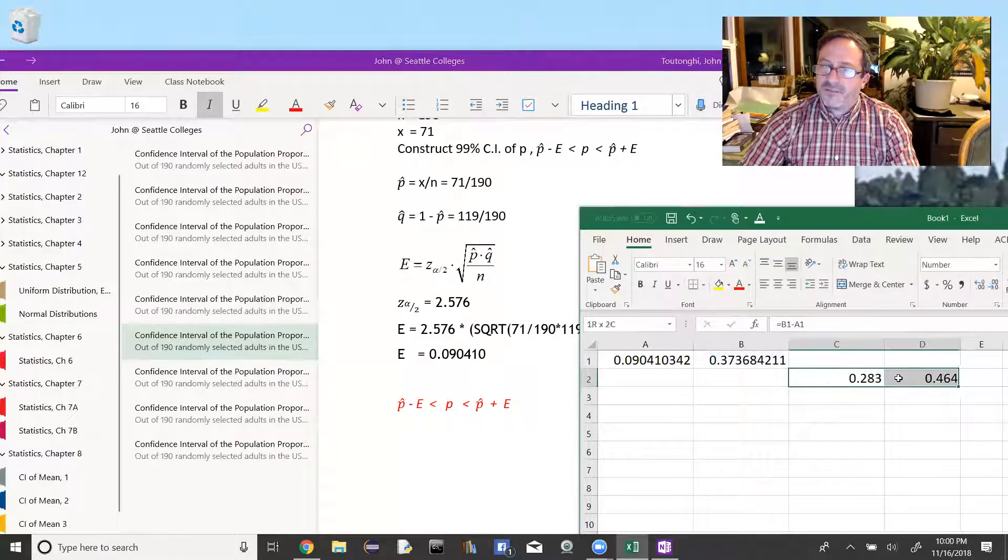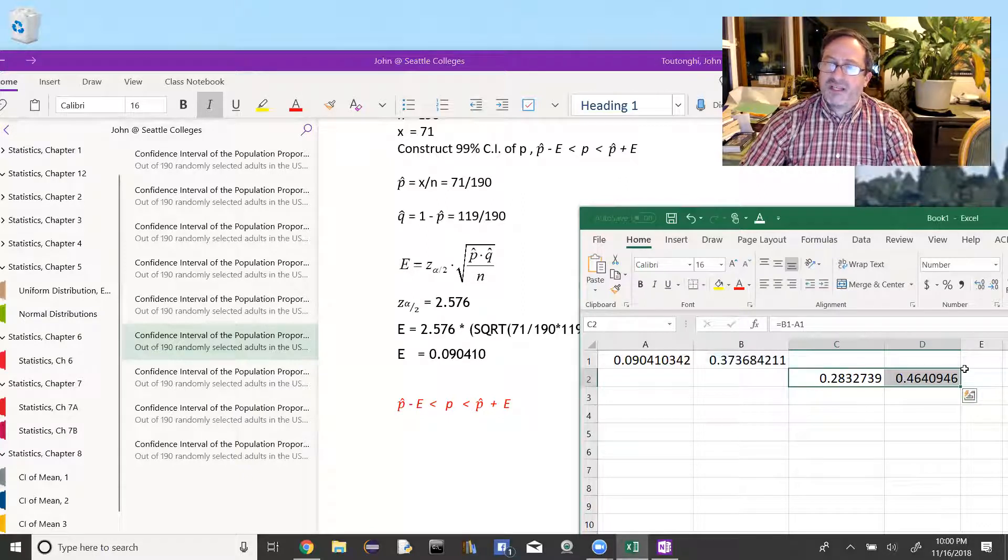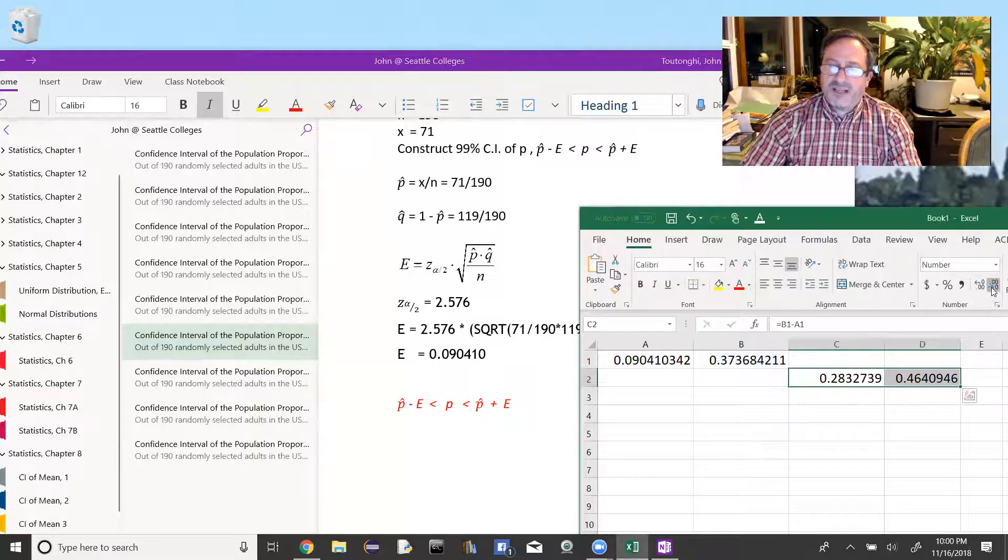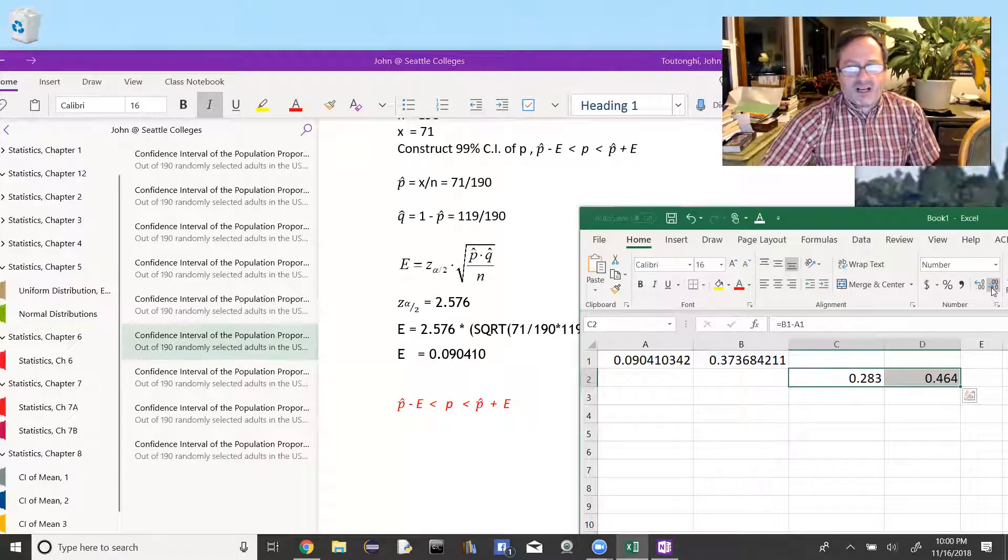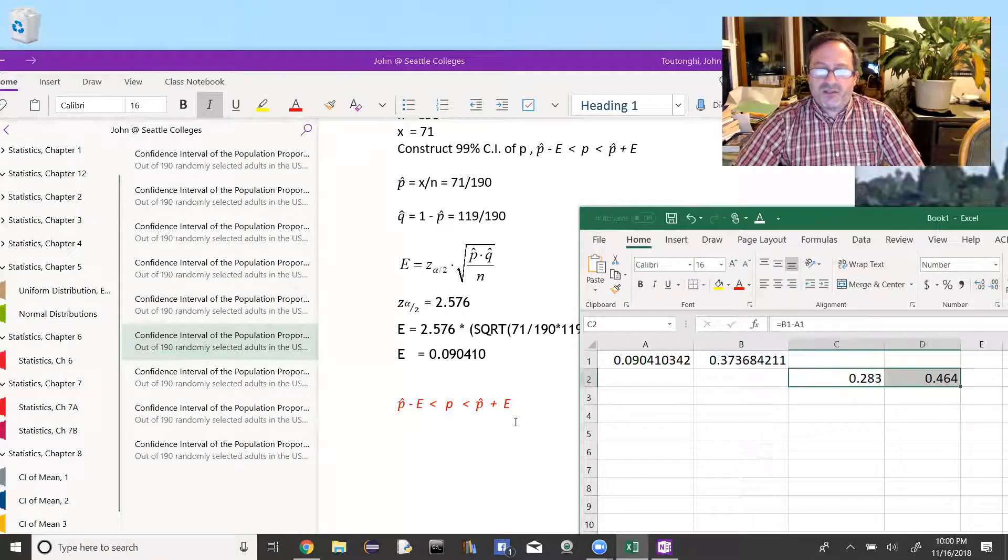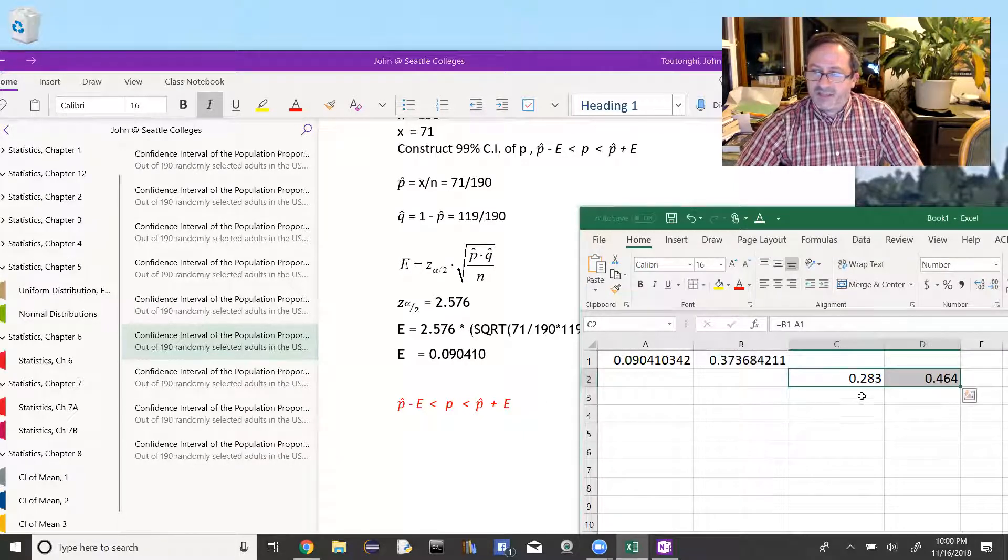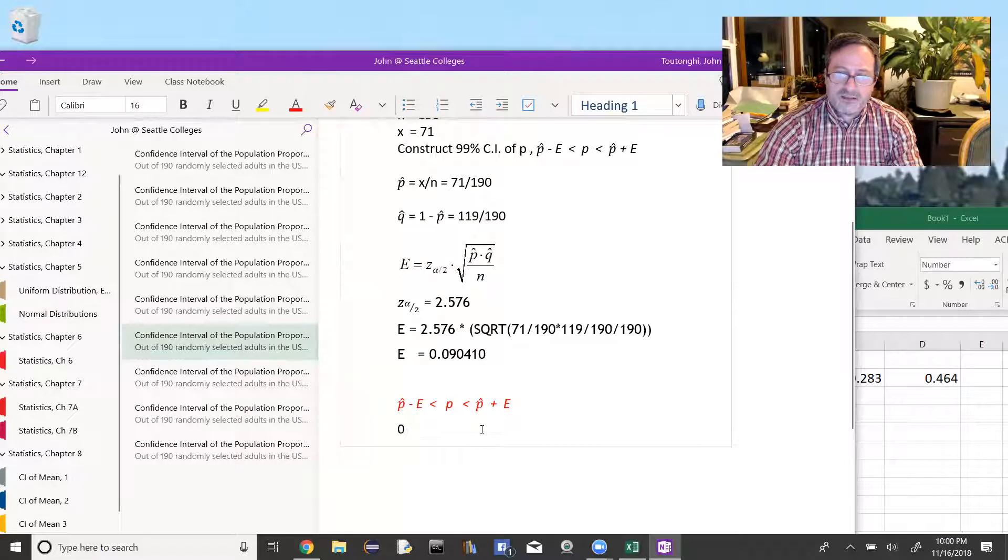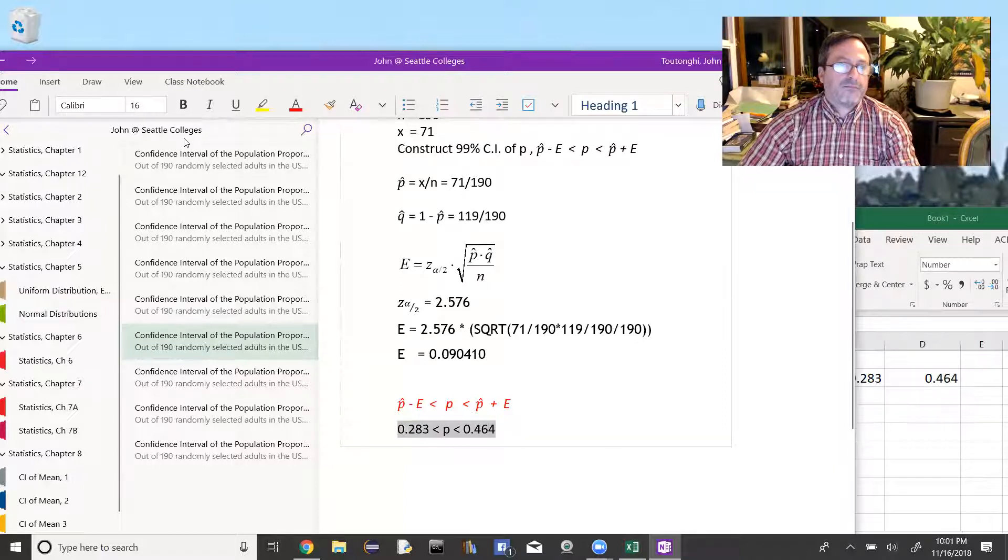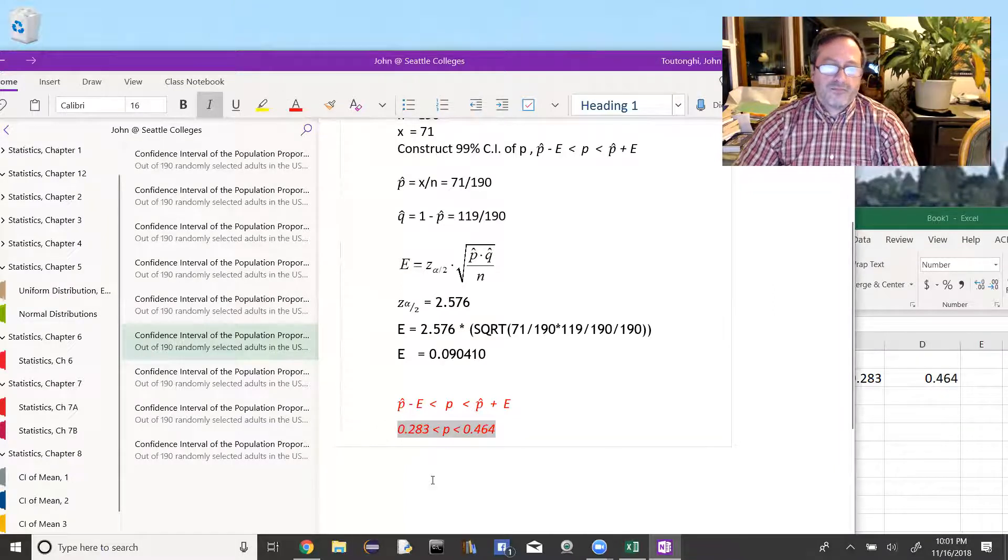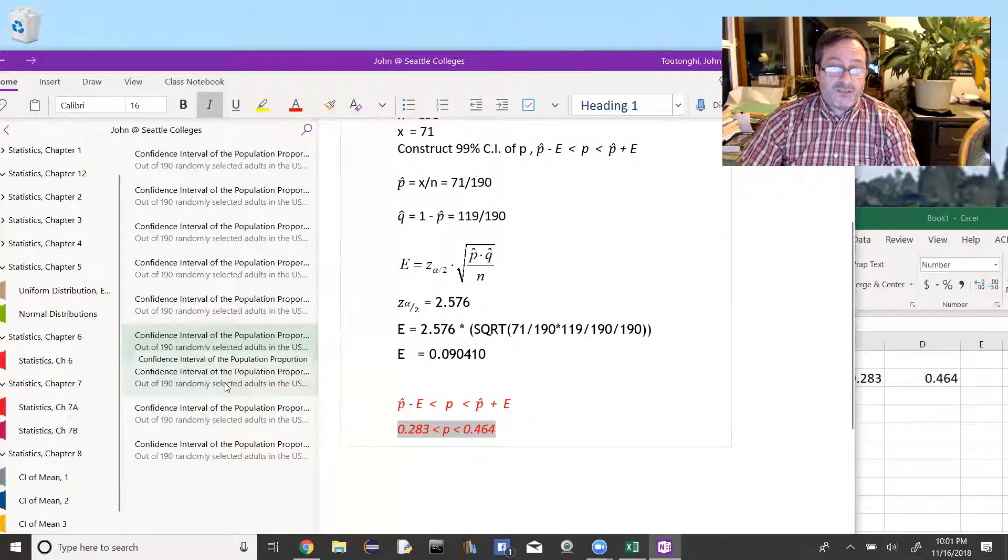The right side would be p-hat plus the error. I've actually already rounded these, so normally they'd be more decimal places, and once you've done this final computation, you could round these down to whatever decimal place the homework problem is asking for. I'll generally say two, three decimal places for these proportions, so three decimal places down here, 0.283 to 0.464. That would say that 0.283 is less than my population proportion p is less than 0.464, and that's my confidence interval, so the problem's actually done.